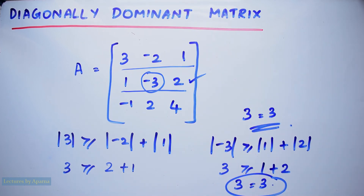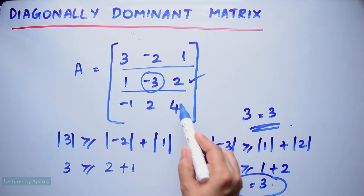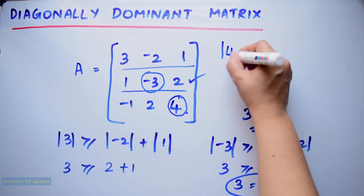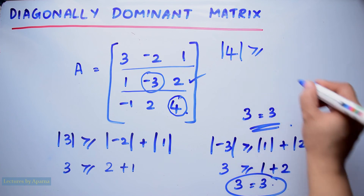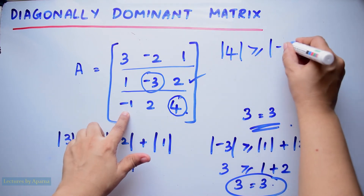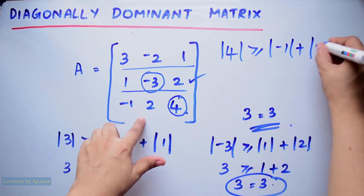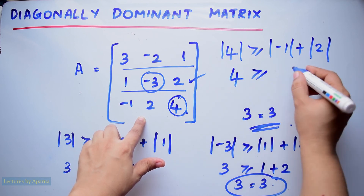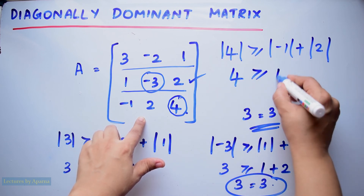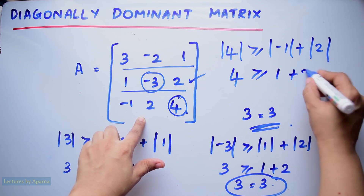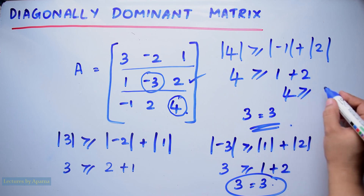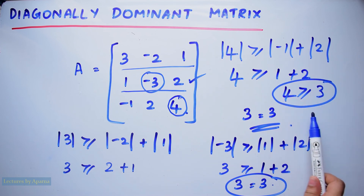Now we check the third row. In the third row, 4 is the diagonal element. We check if modulus of 4 is greater than or equal to modulus of minus 1 plus modulus of 2. Modulus of 4 is 4, which is greater than or equal to 1 plus 2 equals 3. Therefore the condition has been satisfied in the third row also.